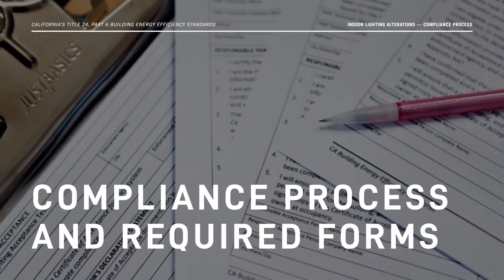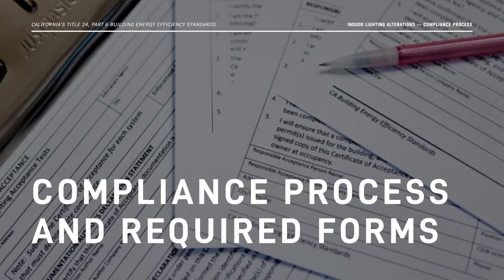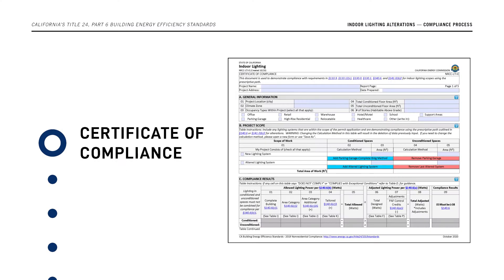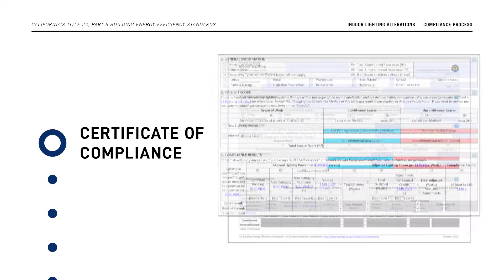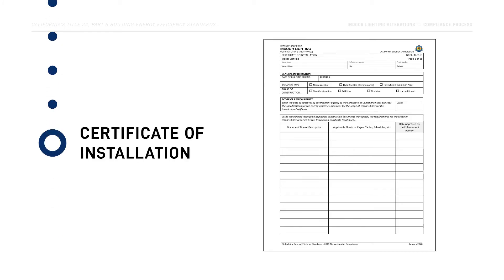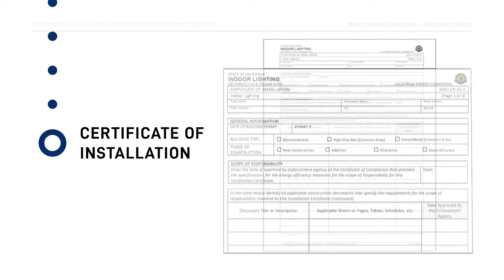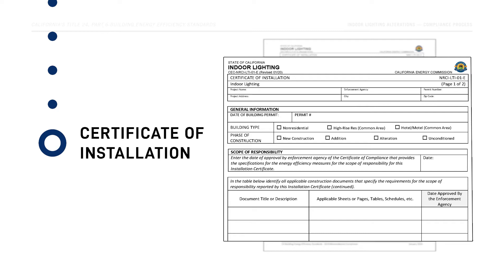Let's go over the compliance process and the forms that are required. Certificate of Compliance forms are submitted to the Building Department during the project's permit phase. These forms enable plan checkers to verify that the proposed lighting system alteration complies with the Energy Code. Certificate of Installation forms are completed by the installer or contractor after the lighting installation is complete. They confirm that the installed lighting system matches the plan design and that it meets the Energy Code requirements for the project.